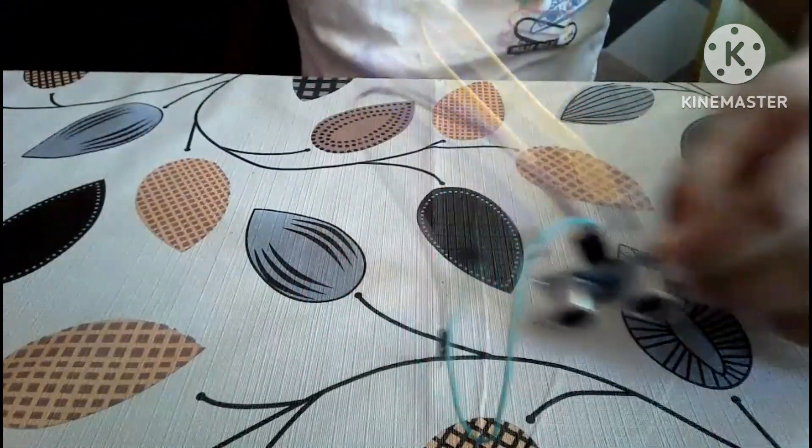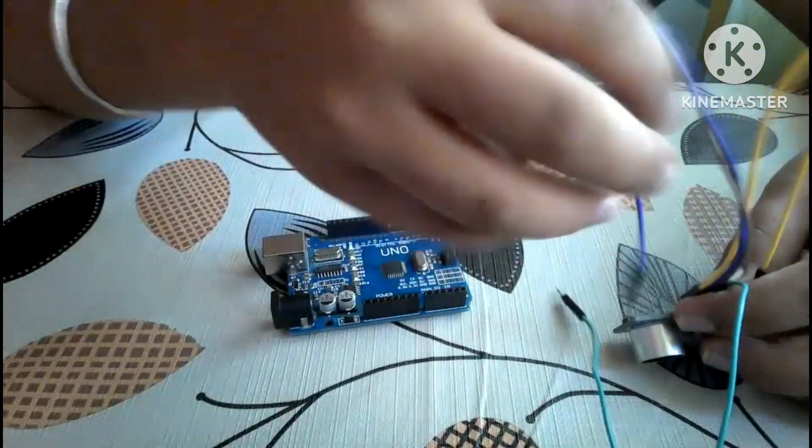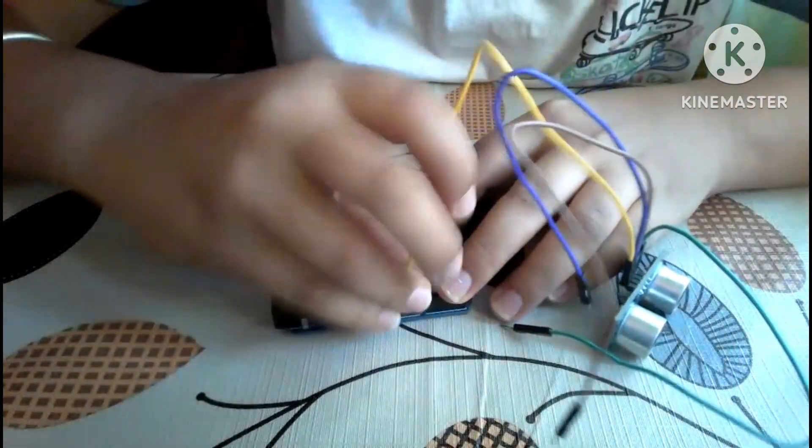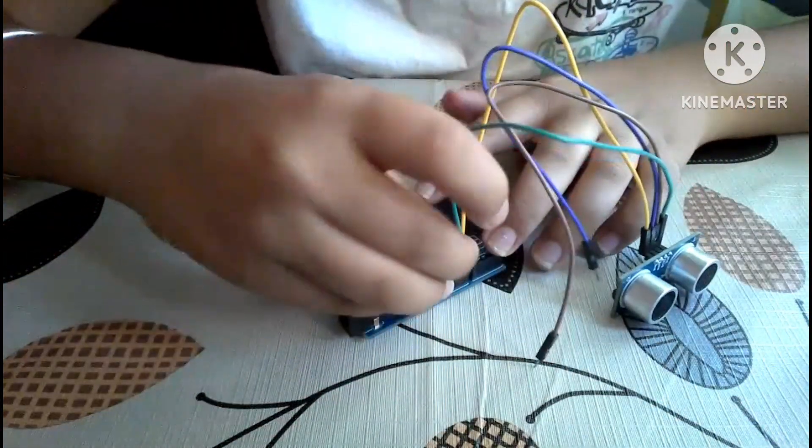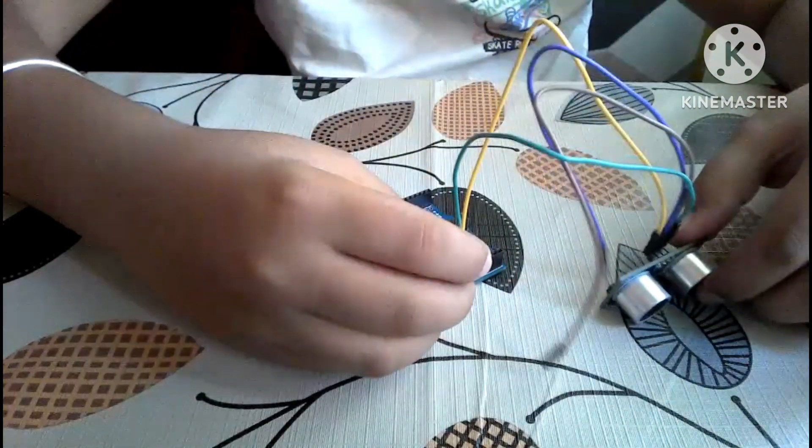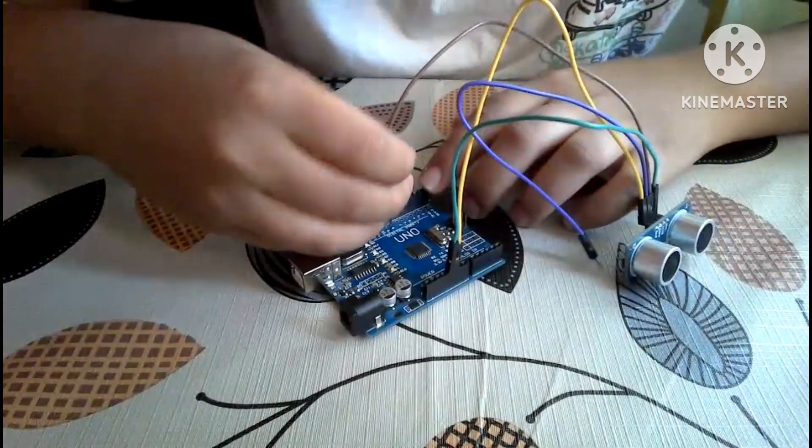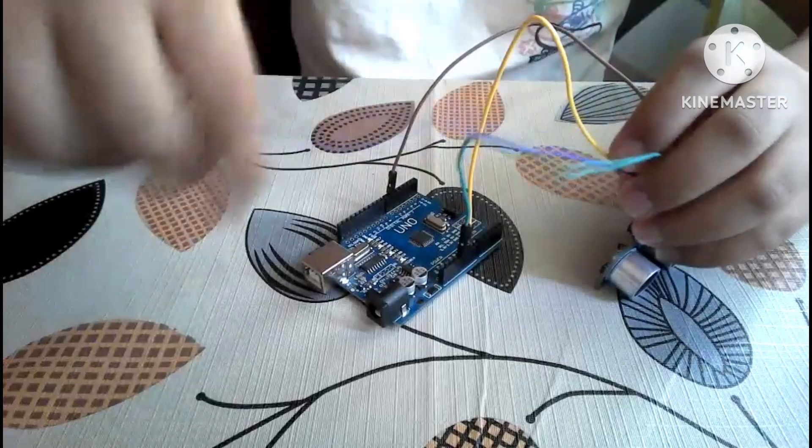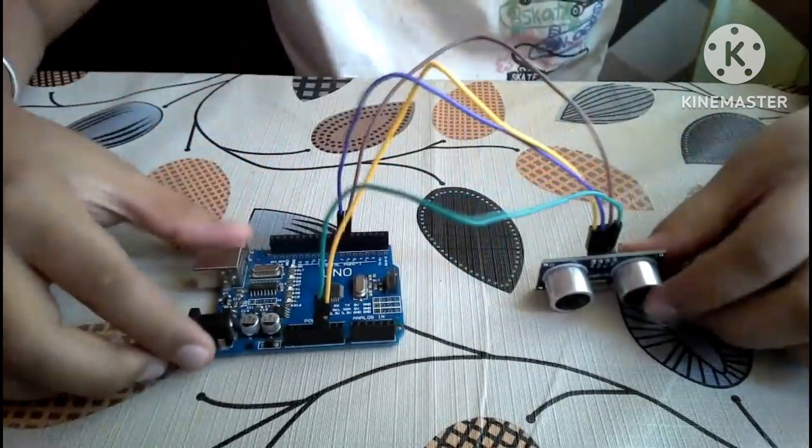Take the Arduino Uno and start connecting these pins. Connect the ground pin to ground, the VCC pin to 5V, the trigger pin to pin number 6, and the echo pin to pin number 7. The connection for the ultrasonic sensor is done.